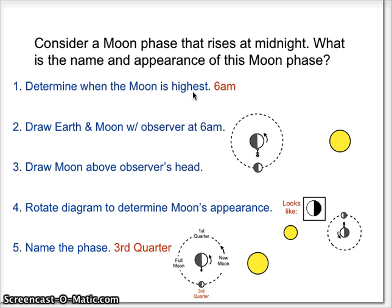That is what's most helpful. We figure out when it's highest in the sky, and then we step through drawing our diagram, rotating our paper to see what it will look like, and then lastly adding in the name.